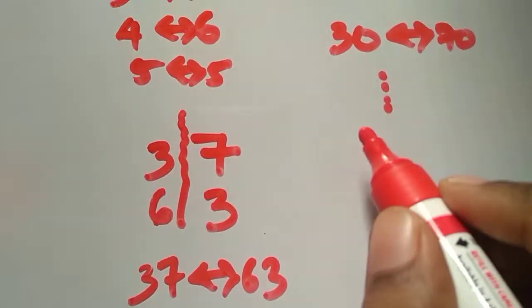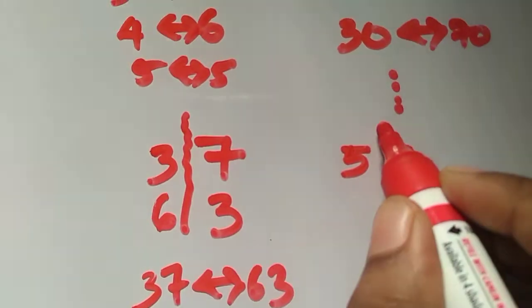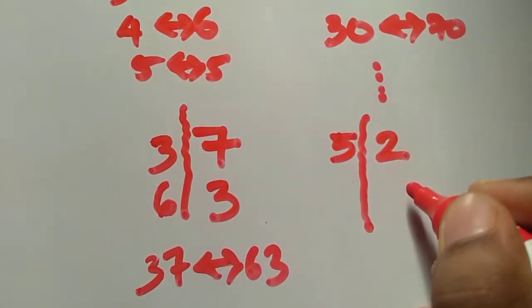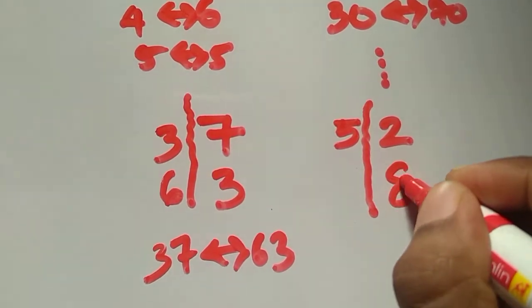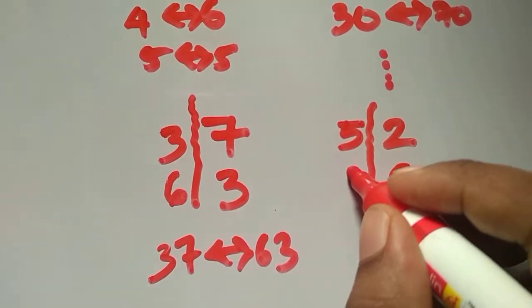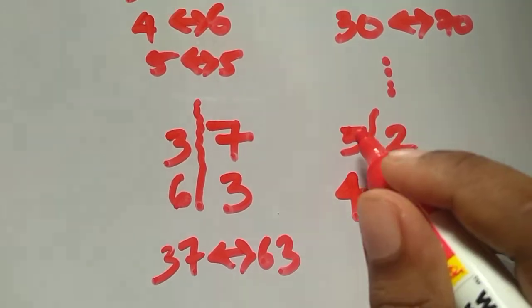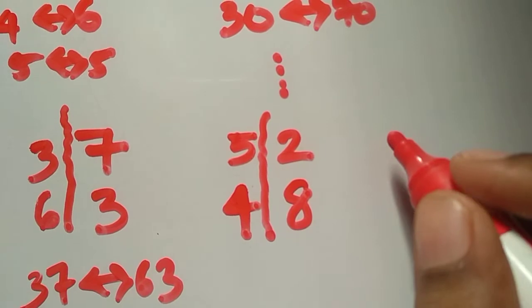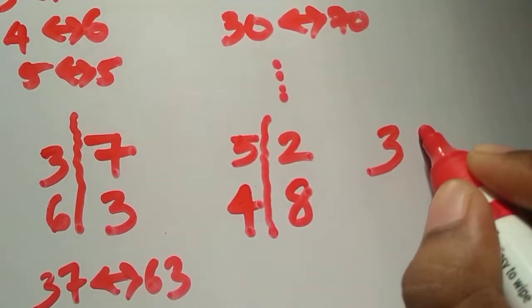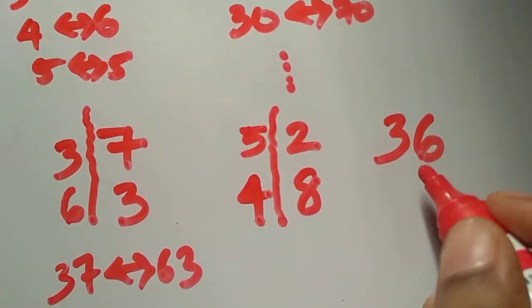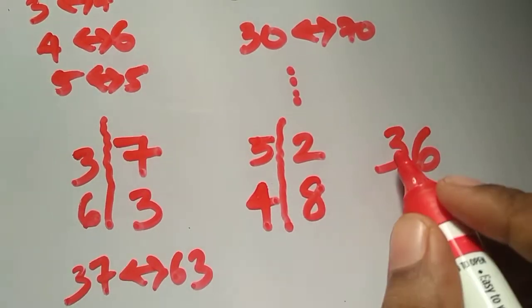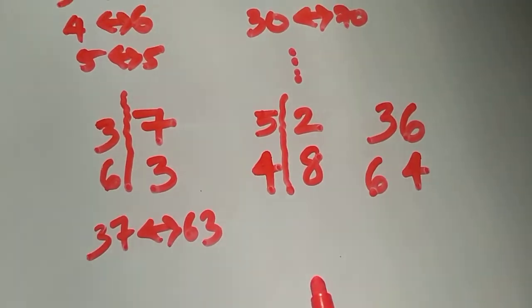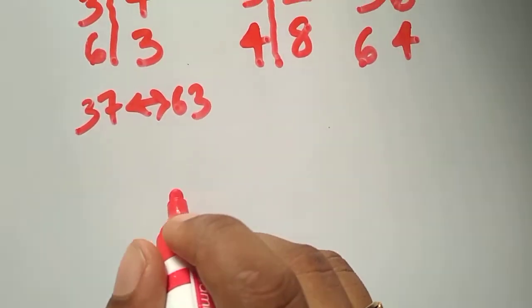Another example: 52. The complement of 2 with respect to 10 is 8. And 5 when added to 4 gives 9. So the 100's complement of 52 is 48.